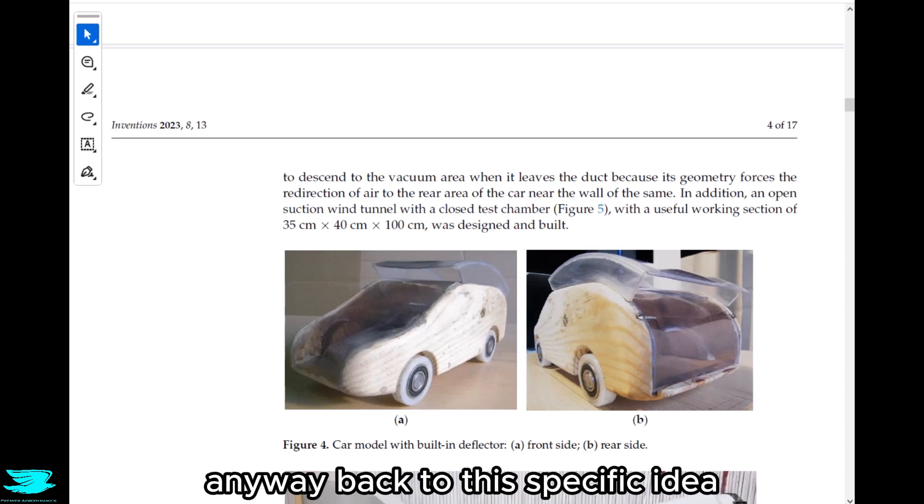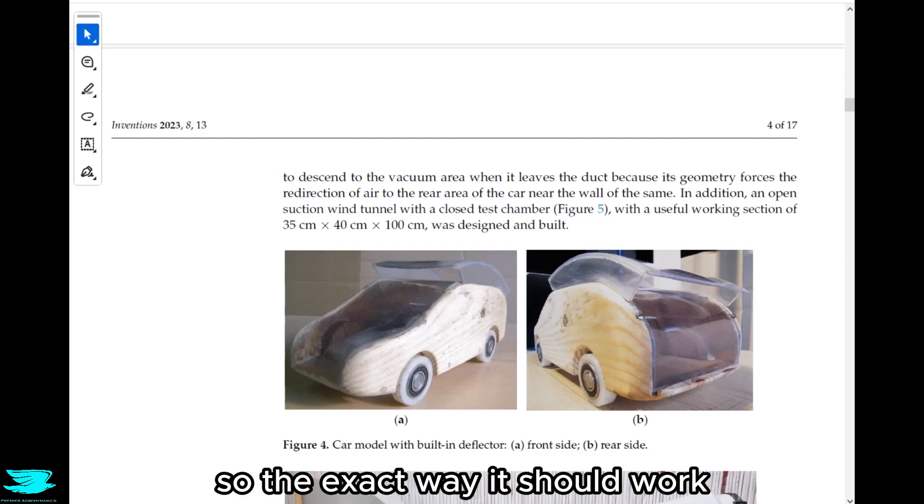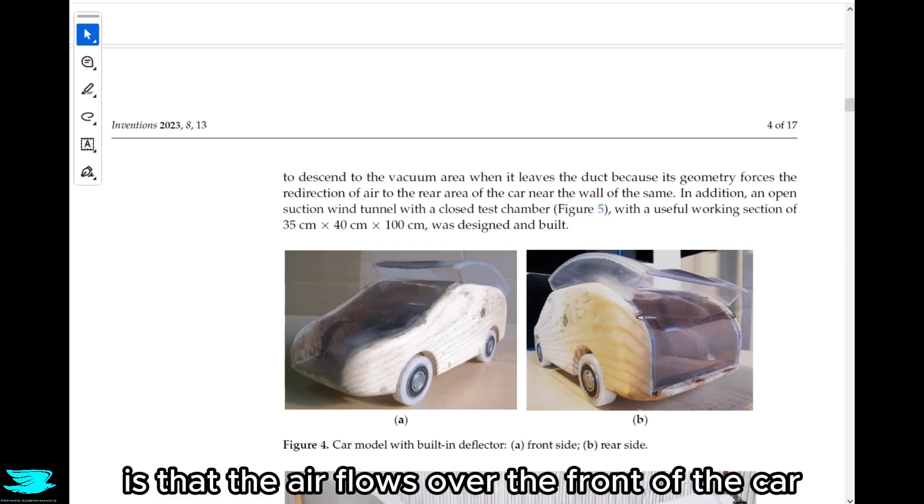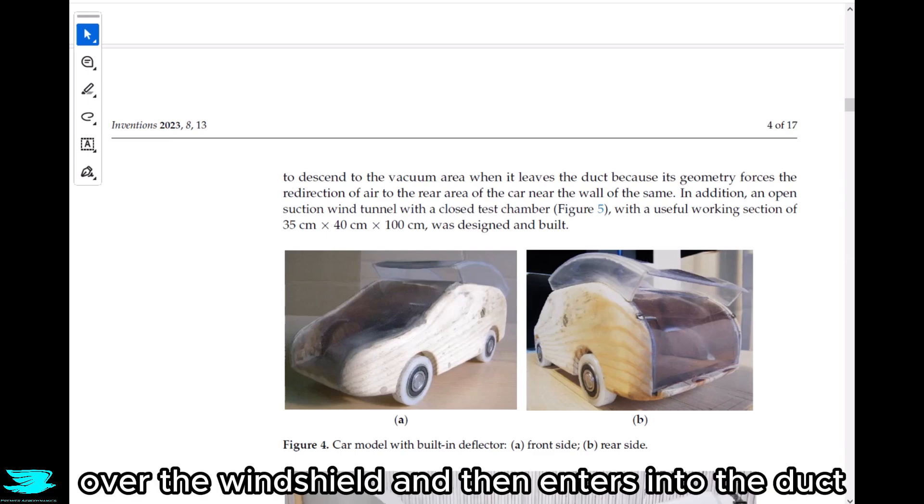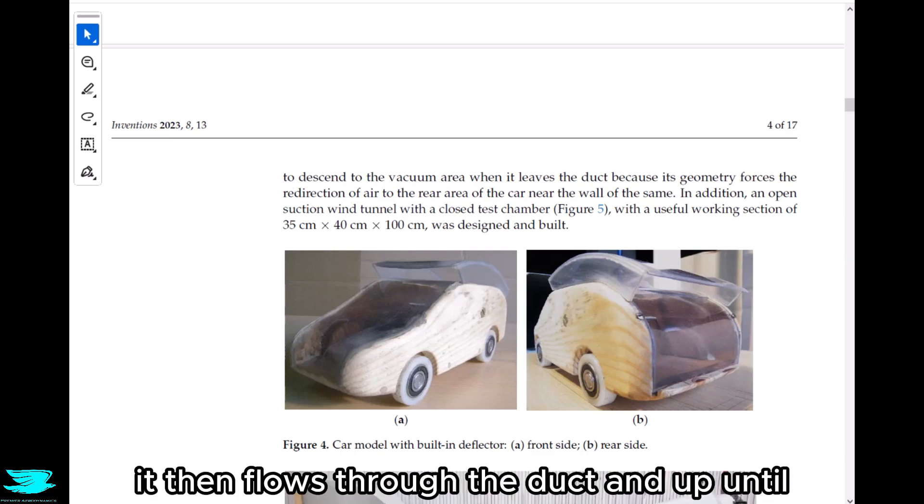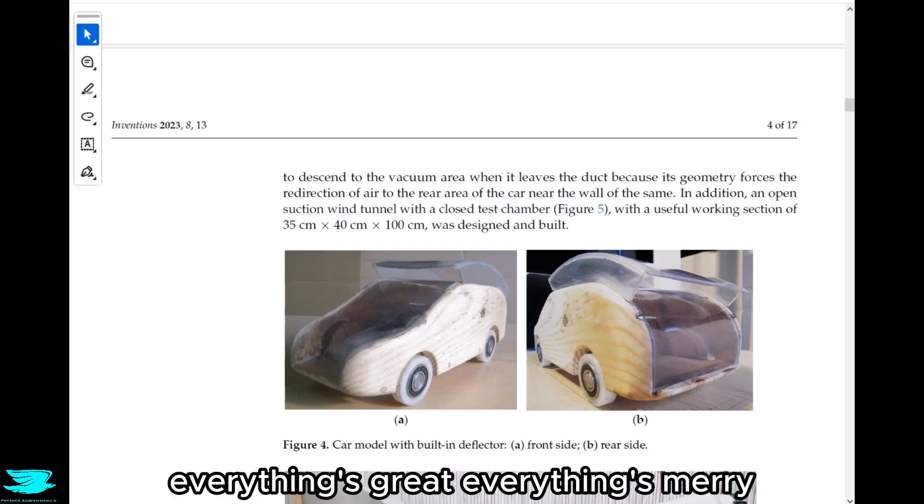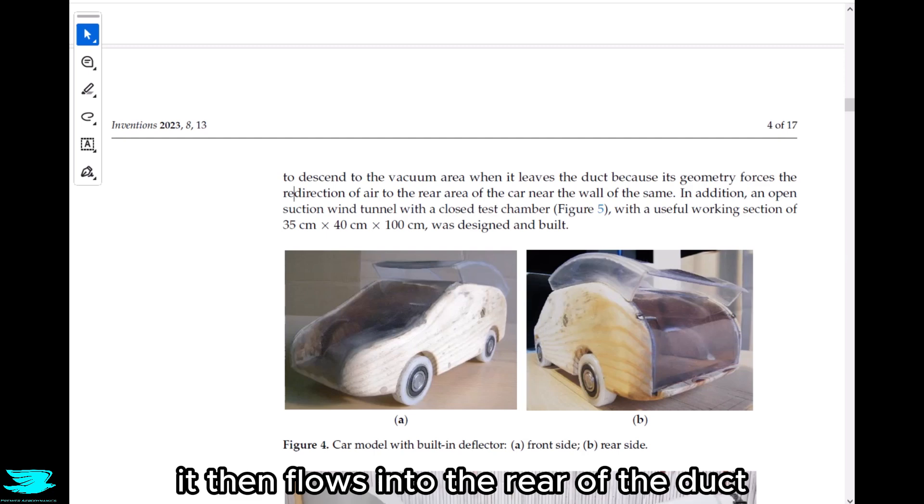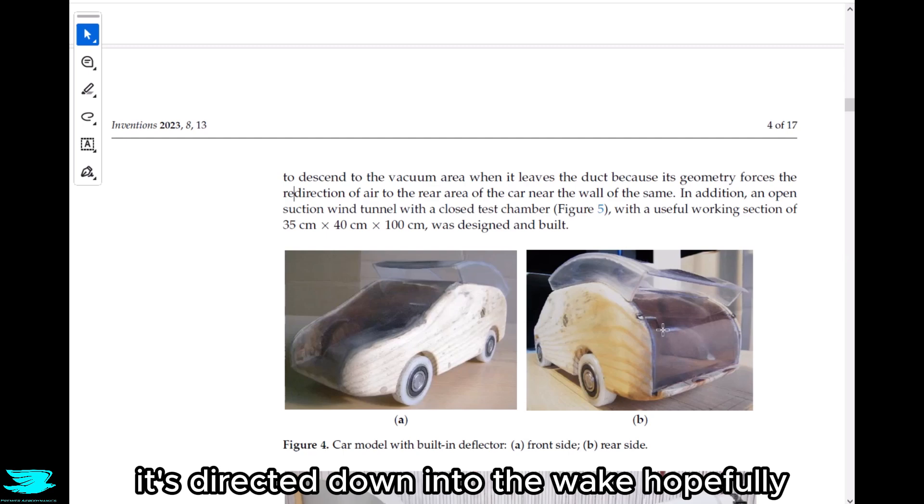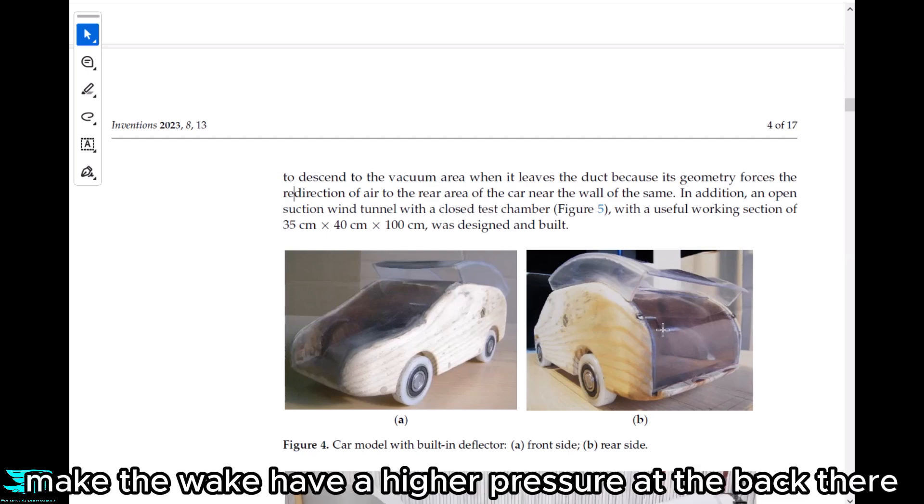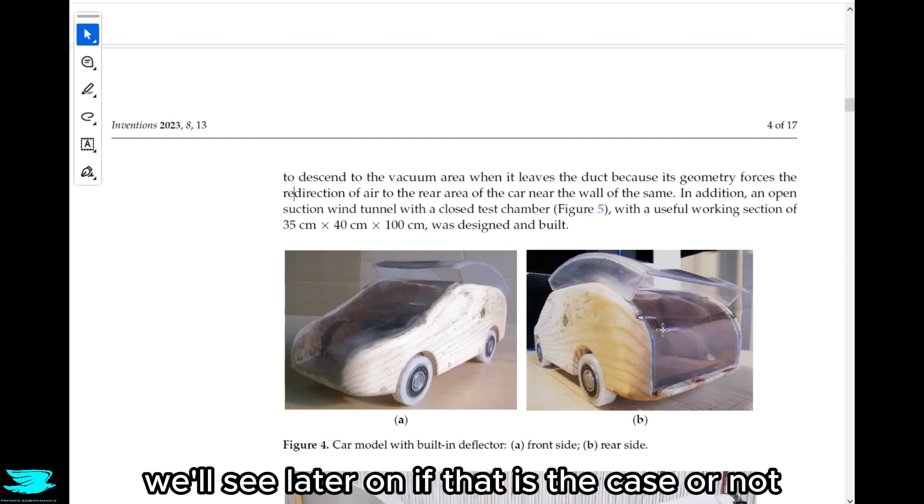Back to this specific idea. The exact way it should work is that the air flows over the front of the car, then over the windshield and enters into the duct. It then flows through the duct, and up until this point everything's great. It then flows into the rear of the duct, and as we can see in figure 4b, it's directed down into the wake. That will hopefully make the wake have a higher pressure at the back there.